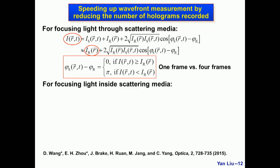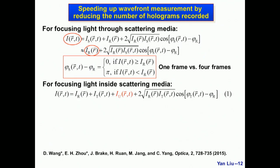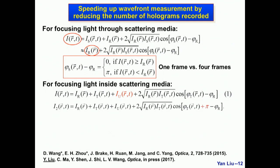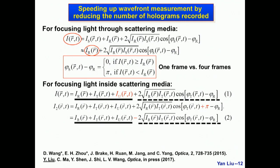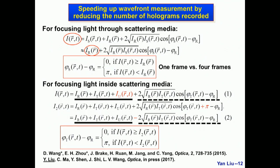However, this method does not work for TRUE focusing inside scattering medium, because in TRUE focusing there is a large amount of photons not tagged by the ultrasound, and this term is much stronger than the interference term. So we developed a double exposure scheme: we record two frames, and in the second frame, we shift the phase of the ultrasound-tagged light by π. By comparing the two intensity equations, all corresponding terms are the same except the sign of the interference term. By comparing I₁ with I₂, we can obtain the binary wavefront of the ultrasound-tagged light. If I₁ is greater than I₂, the cosine term is positive, phase difference is between -π/2 and π/2, assign it to zero. If I₁ is smaller than I₂, the cosine term is negative, assign it to π. With this method, we only need two frames instead of four.